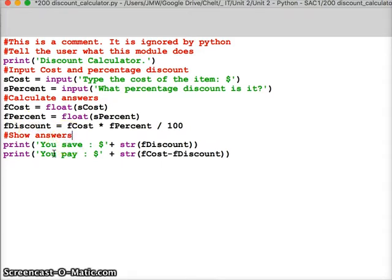The last thing we need to do is actually show our answers. So I'm going to print on the screen you save plus string f discount. f discount is how much we're saving. It gets turned into a string and when you add strings it's not like adding in mathematics. The strings are joined together to make a longer string.